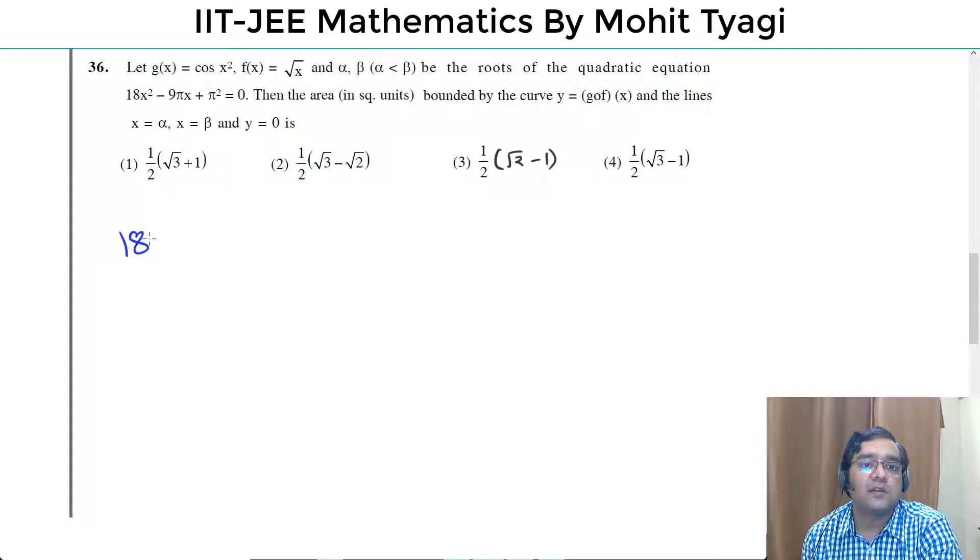What is the quadratic equation? 18x² - 9πx + π² = 0.